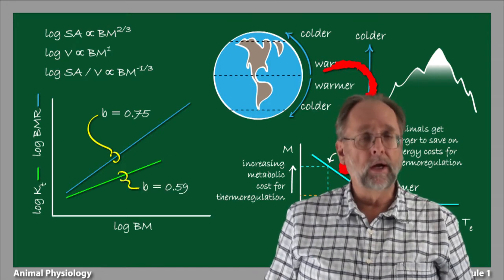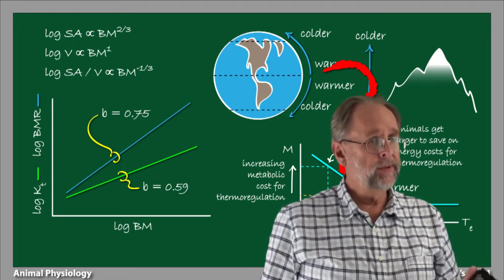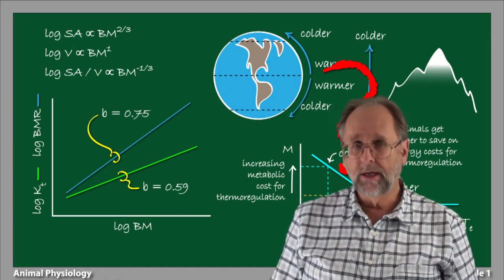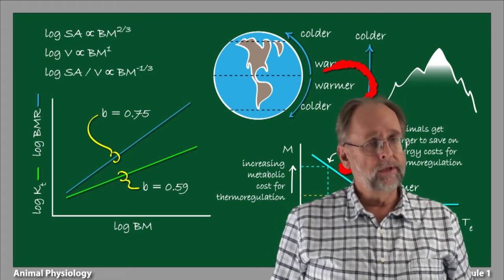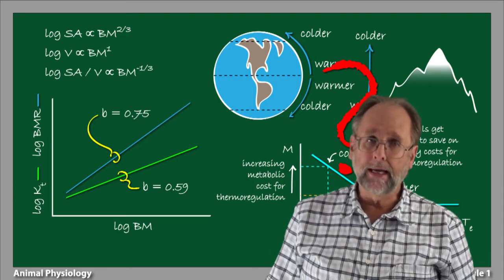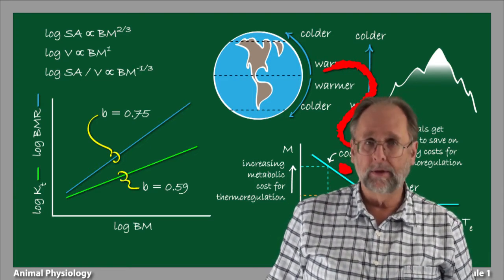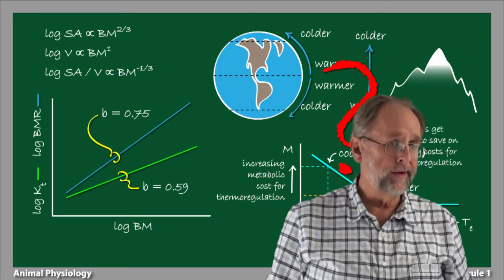Thermal conductance, meanwhile, as we've seen, scales to an exponent something a little bit greater than 0.6, shown here in green. Increasing thermal conductance will increase the flow of heat between the body and environment at any environmental temperature below the lower critical temperature.